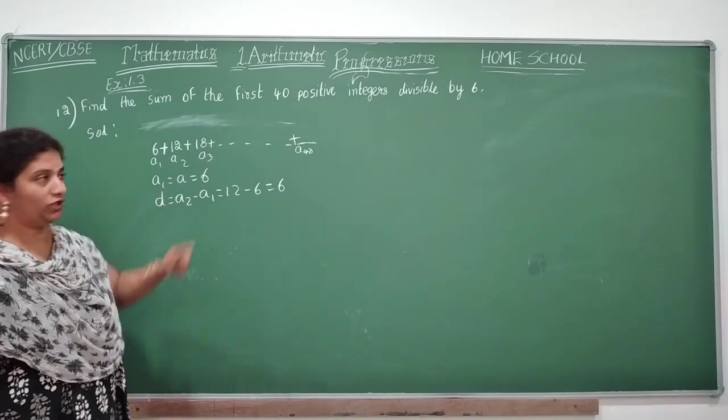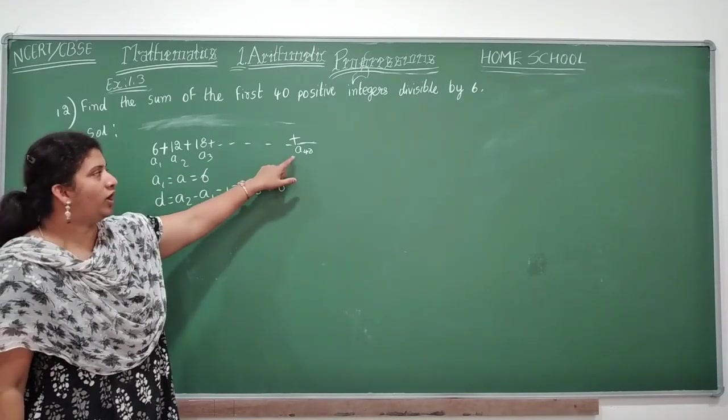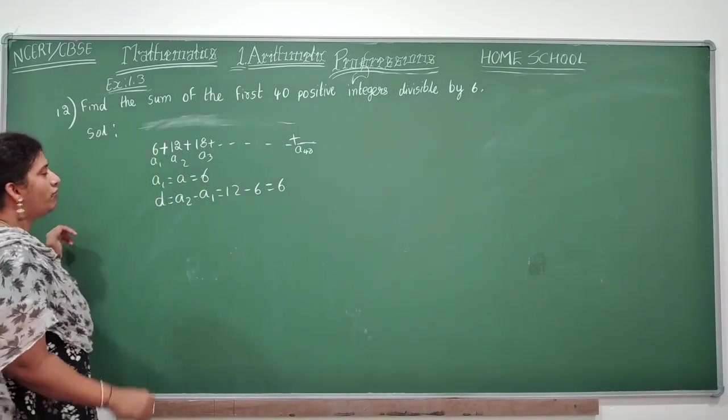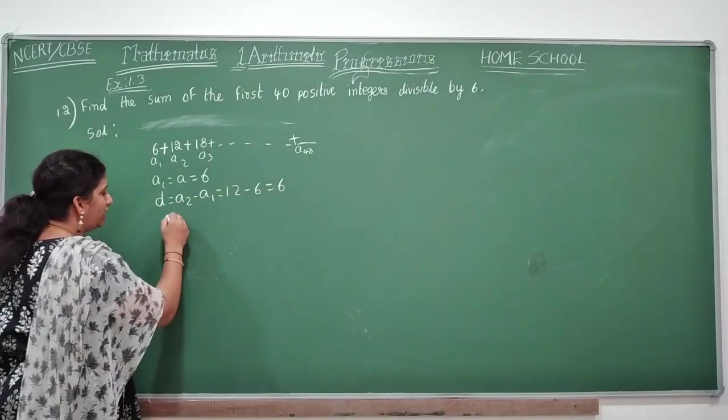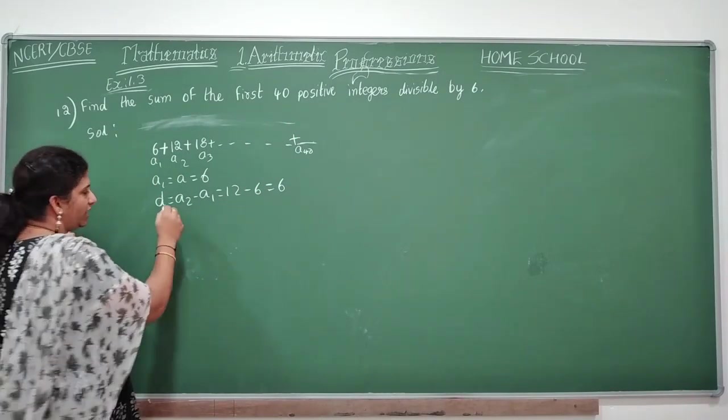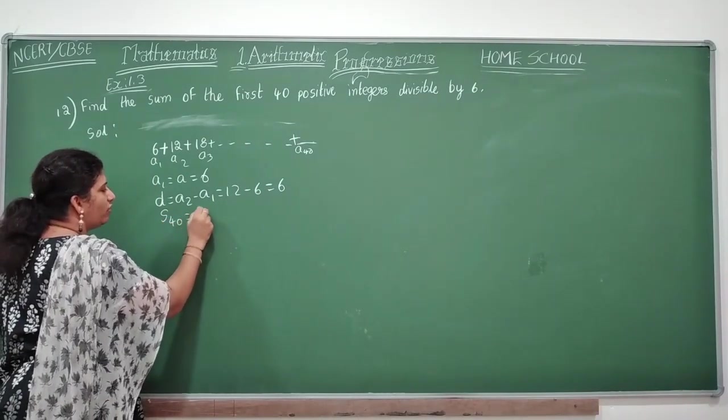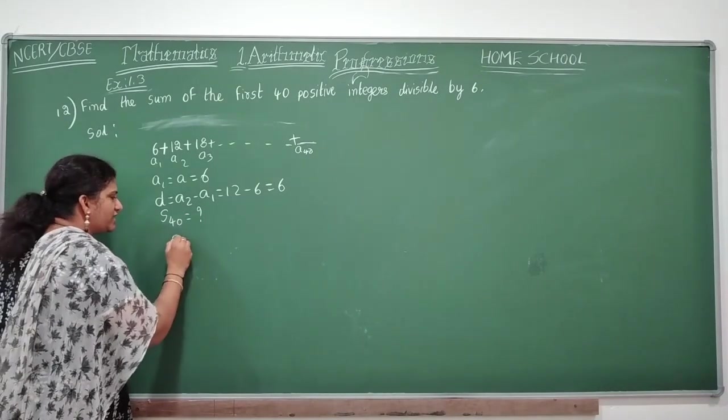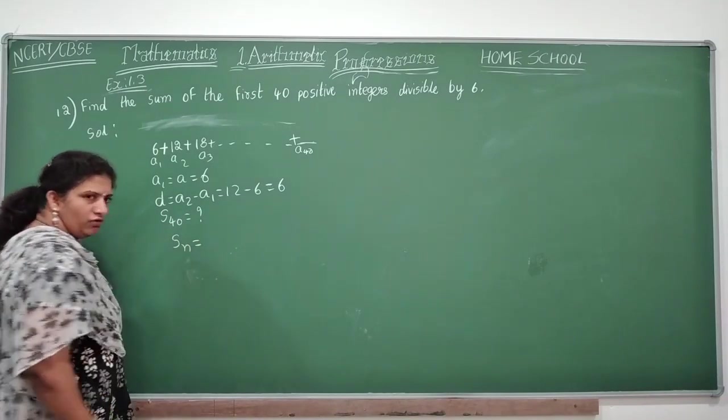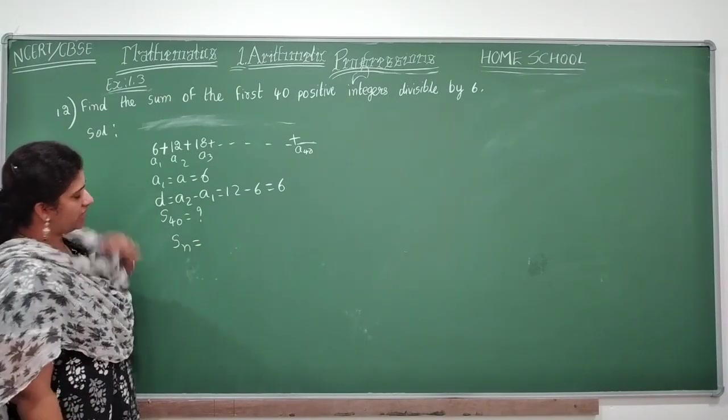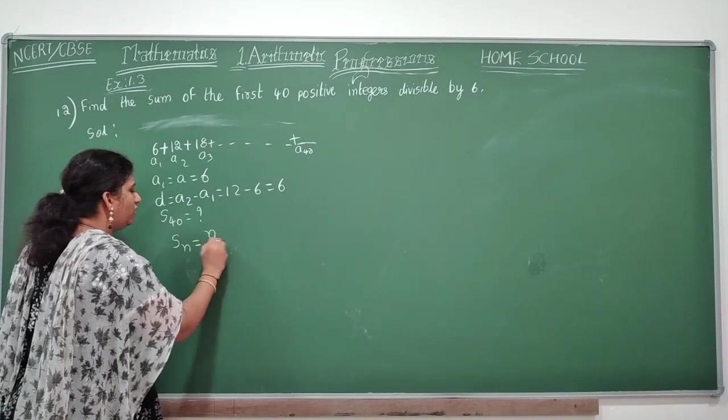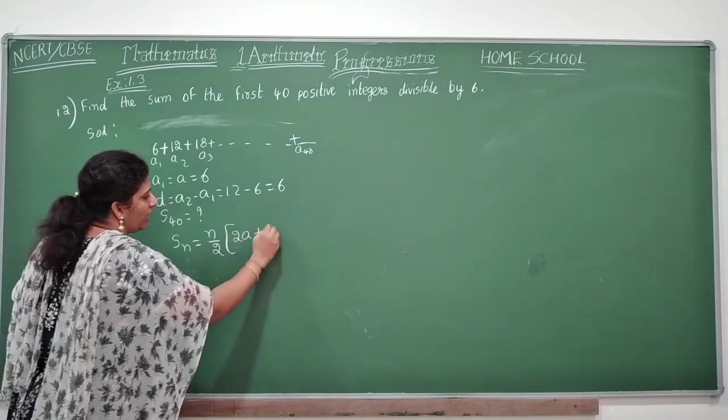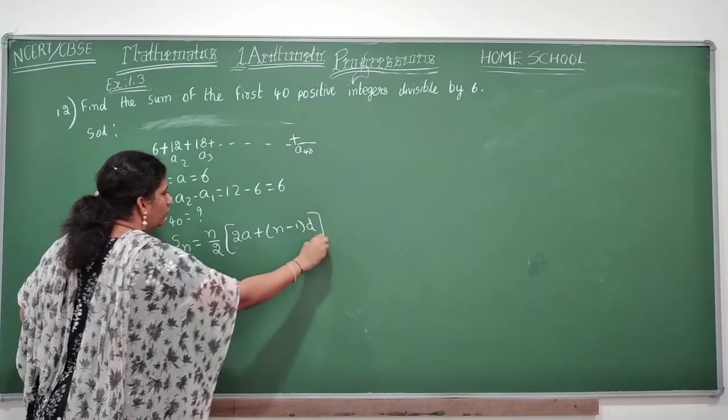So whatever we need to calculate, we know. What we know? We need to find first a, first term, and common difference d. So a1 is equal to a is equal to 6. Now common difference d is equal to a2 minus a1, that is 12 minus 6 is equal to 6. I got a, I got d. Now I need to calculate not a40. We don't want a40 term. Sum of 40 terms we need. So sum of 40 terms means what children here? S40. What is your Sn formula?